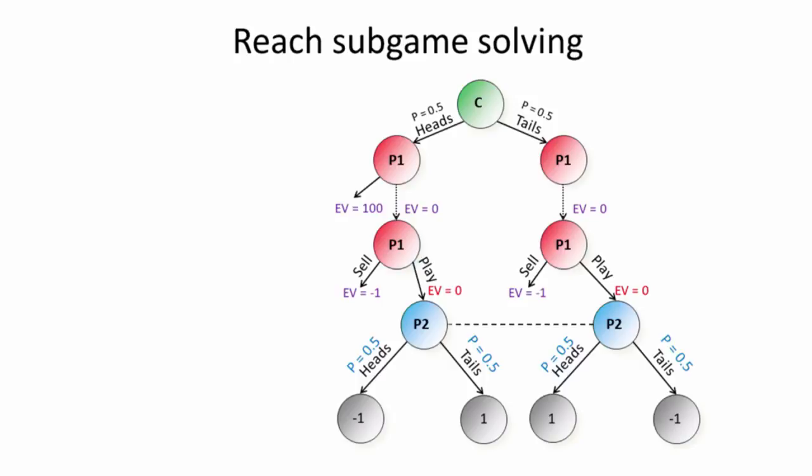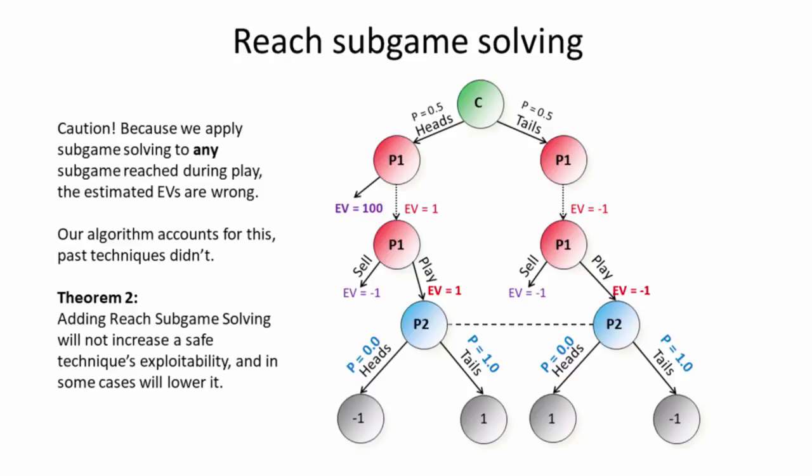Well, if we find ourselves in the play sub-game, then they would have had to have given up this expected value of $100 earlier on if they're in the head state. So by reasoning about this, we can allow the value of player one to increase in the case of the head state. And in the process, lower the value of player one in the tail state and still be safe, still guarantee that they're not doing any better than before. And in fact, they're actually doing worse in this case. So reach sub-game solving guarantees that we can do just as well as past safe sub-game solving techniques, and in some cases can actually do better by looking at past actions the opponent might have taken.